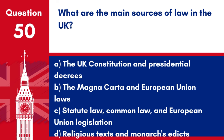Question 50. What are the main sources of law in the UK? A. The UK constitution and presidential decrees. B. The Magna Carta and European Union laws. C. Statute law, common law and European Union legislation. D. Religious texts and monarchs' edicts. Answer: C. Statute law, common law and European Union legislation. The main sources of law in the UK include statute law, common law and aspects of European Union legislation.